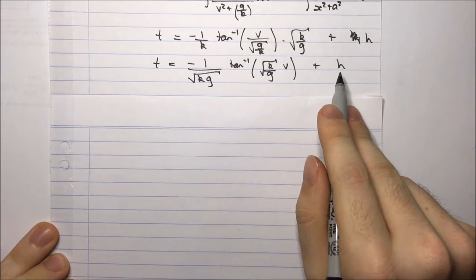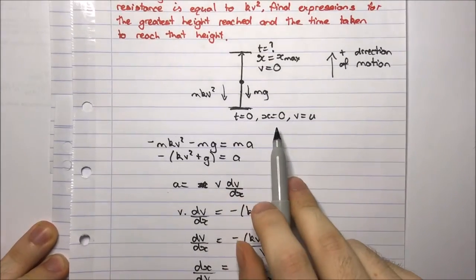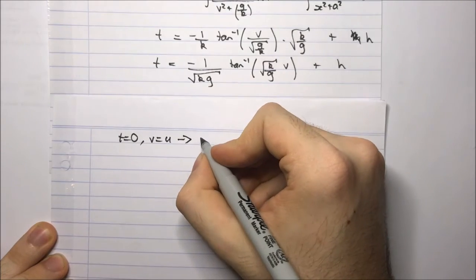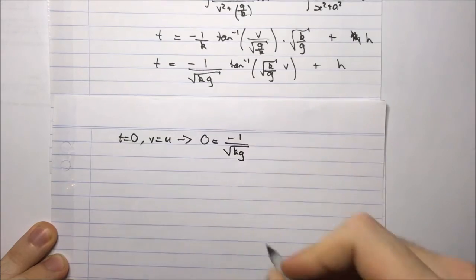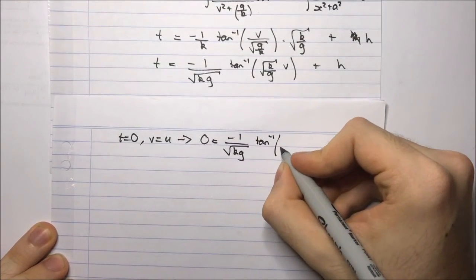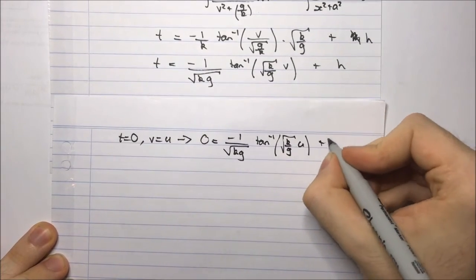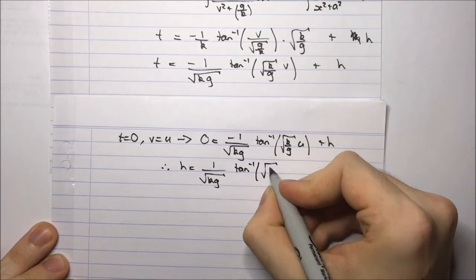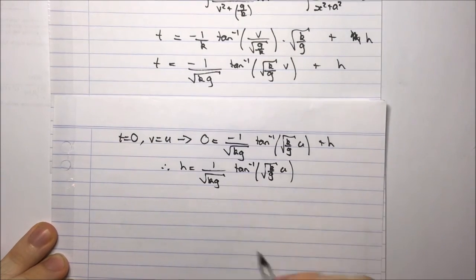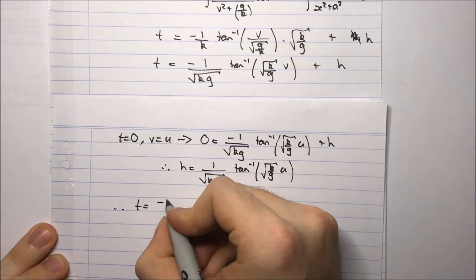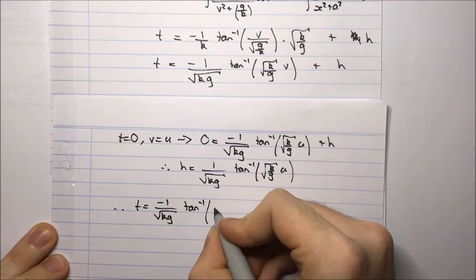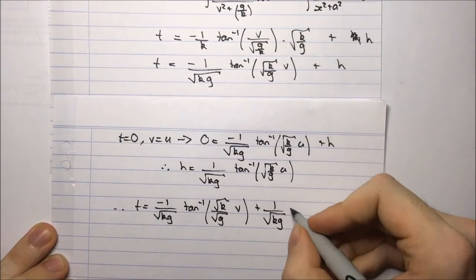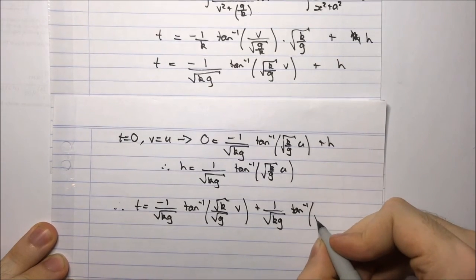To find the integration constant h, we use the initial conditions: t equals 0, v equals u. Substituting: 0 equals minus 1 over the square root of kg times tan inverse of (square root of k/g times u) plus h. Therefore t equals minus 1 over the square root of kg times tan inverse of (square root of k/g times v) plus 1 over the square root of kg times tan inverse of (square root of k/g times u).